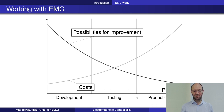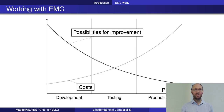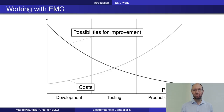Then you go into production. The possibilities for improving your product in terms of EMC go down over time. During the development phase you can change the layout on a printed circuit board easily, select different components, choose a different case that offers some shielding, or arrange the cables in a different way. Here you have lots of chances for improvement at very small costs, because changing the PCB layout doesn't change the later production cost.